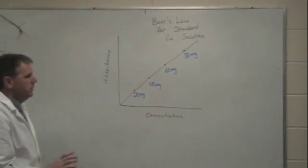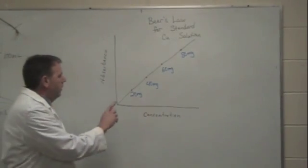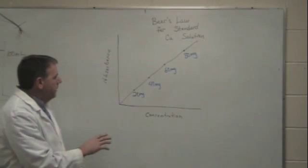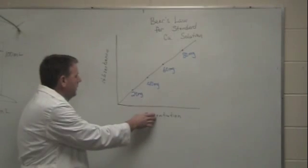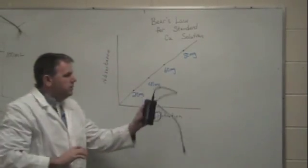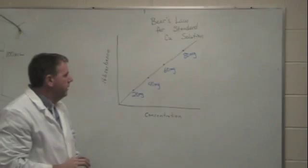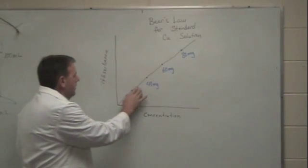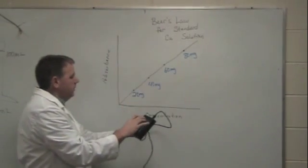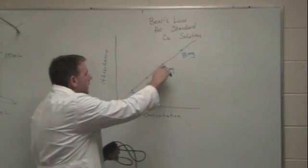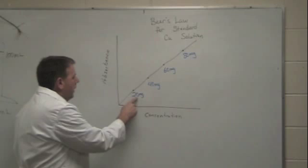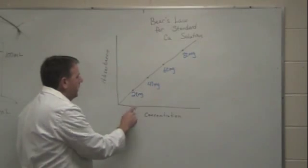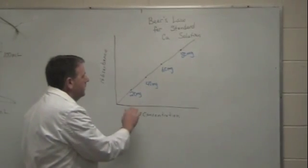So what we're going to do is we're going to use known amounts of a solution or a solution of known concentration. We're going to use the spectrophotometer to measure the absorbance. So by using known concentrations, the machine will measure the absorbance and we will get a Beer's Law plot. And the knowns for today, we want 20 milligrams of copper per 100 milliliters of solution.